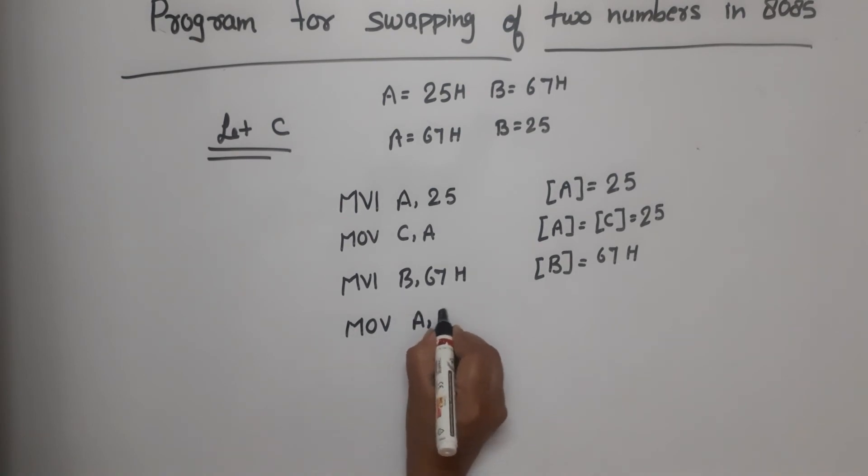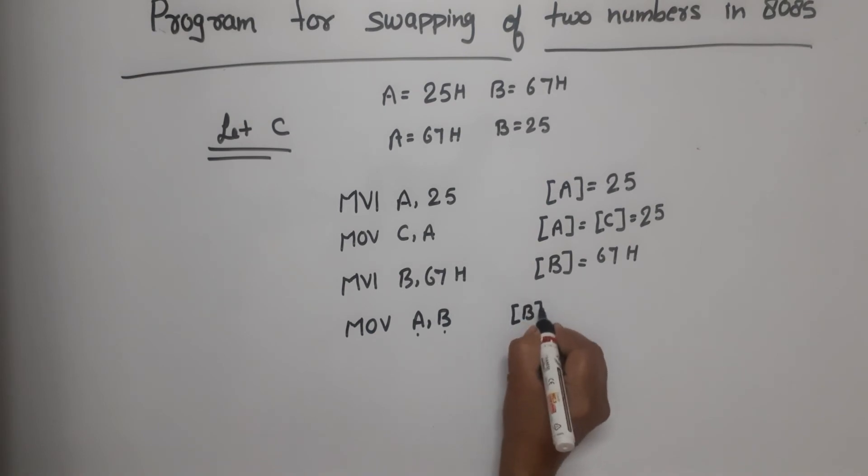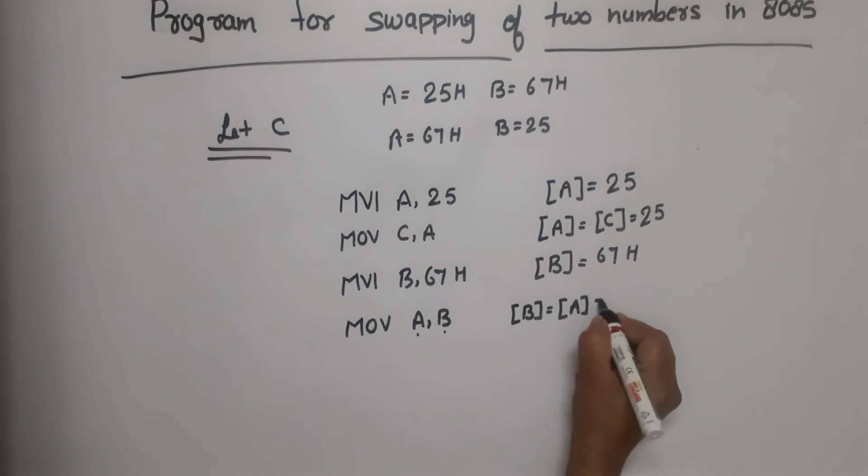MOV A,B. A is the destination, B is the source. Now what is the content of B? Content of B is copied to content of A and what will be both values? 67H. Now B's content is copied to A.